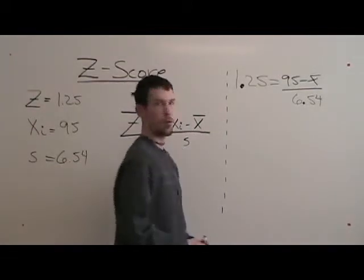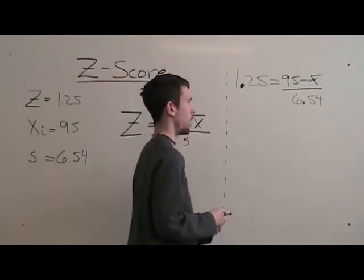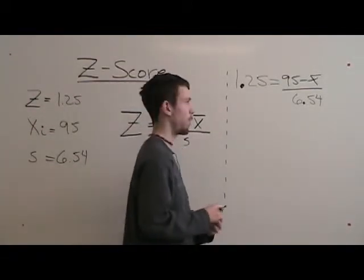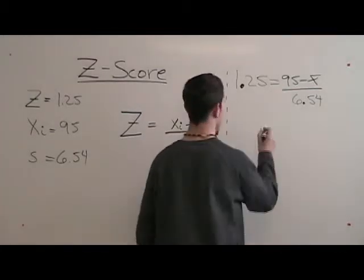First thing you do is multiply 1.25 times 6.54, which is 8.18.